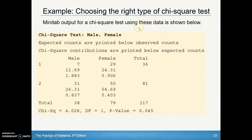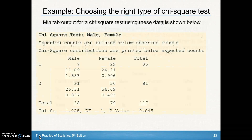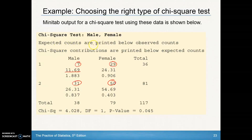Minitab output for a chi-square test using this data is shown below. We'll also show how to use a calculator to enter this data. These are our observed values for the two-way table. The values printed below are expected counts — expected counts are printed below observed counts in the Minitab output.